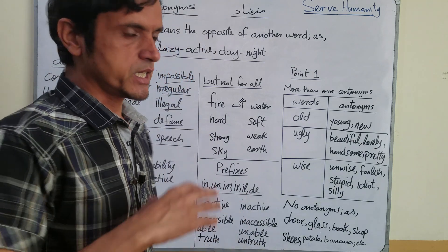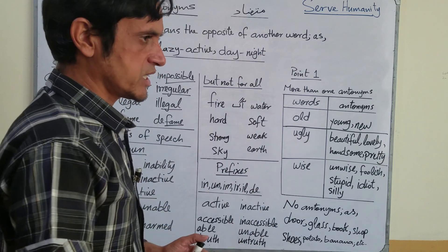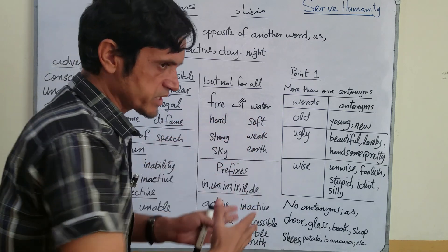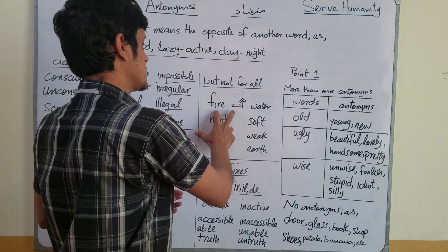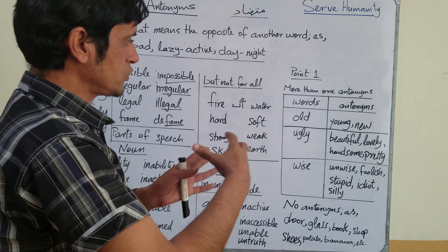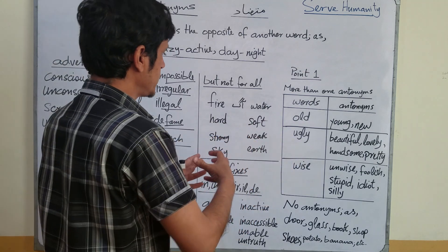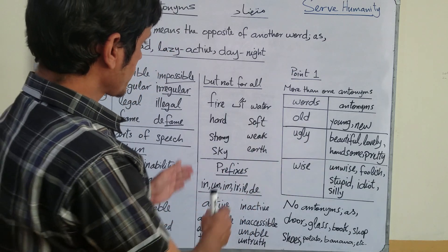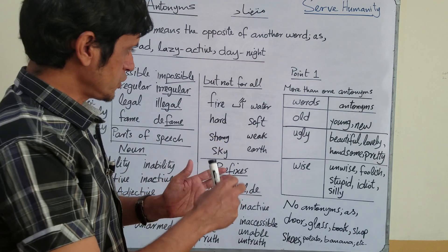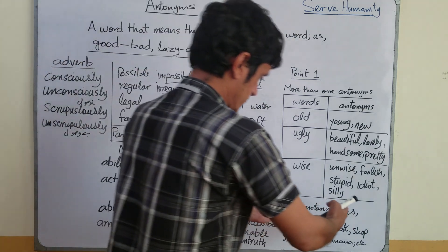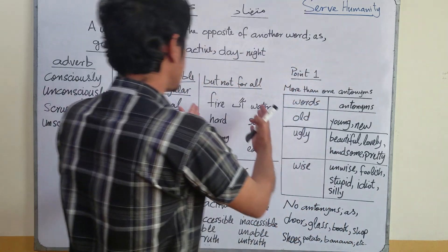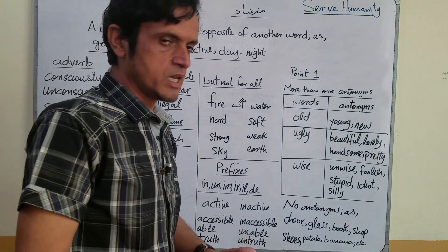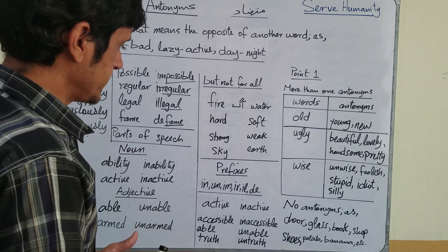But not for all — keep in mind that antonyms are not necessary for every word. However, also remember that not all neuter nouns lack antonyms. Many neuter nouns do have antonyms. For example, fire and water — fire's antonym is water. Both of them are neuter nouns, but they are each other's antonyms because they have completely opposite qualities. Hard and soft are antonyms. Strong and weak are antonyms. Sky and earth are antonyms of each other. So among neuter nouns, some things can have antonyms and some cannot. The more vocabulary and understanding you have, the better you can make this distinction.